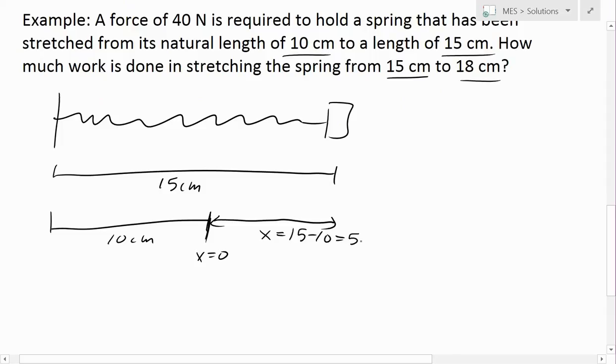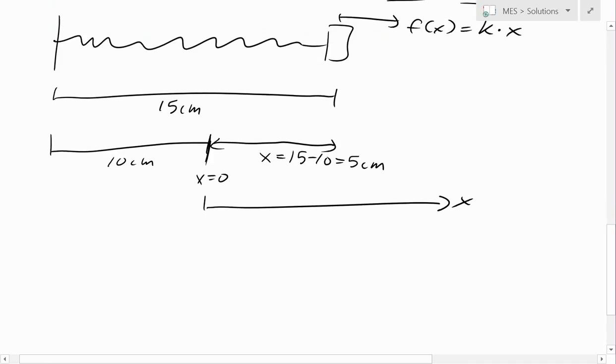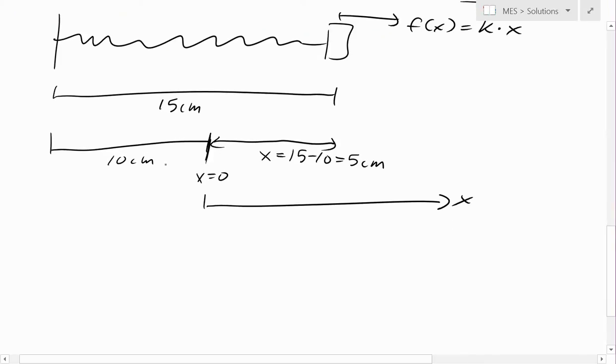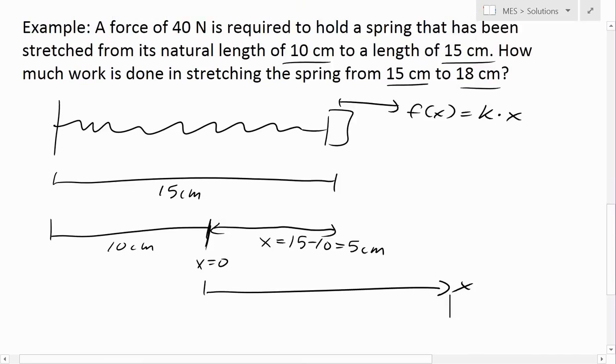So now the force acting on it is f(x), which equals k, our constant, times by x. The x starts from here, where the initial length is 10 centimeters. We can solve for k because we were given that stretching from 10 to 15 is 40 newtons. So force equals k times x, and 40 newtons equals k times this distance, 5 centimeters, or 0.05 meters in standard units.